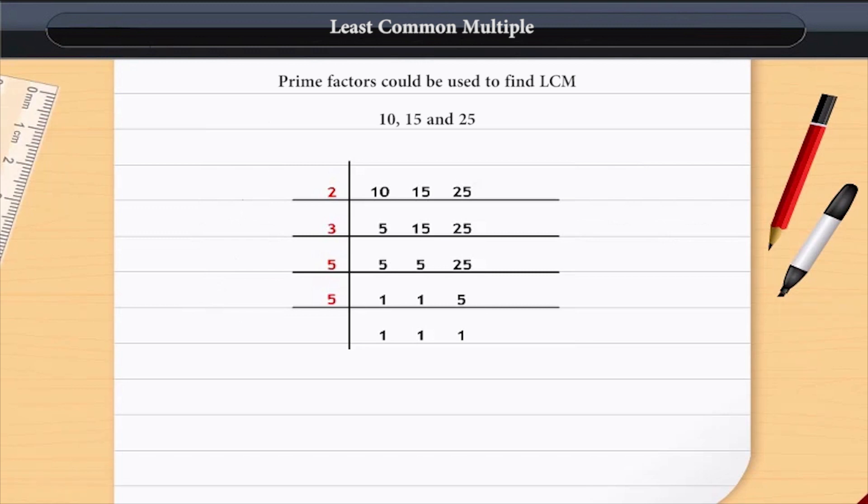All the numbers used at the left are all divisors and their product is LCM. So, the LCM of 10, 15 and 25 is 2 multiplied by 3 multiplied by 5 multiplied by 5 is equal to 150.